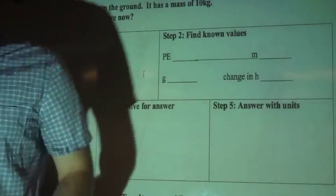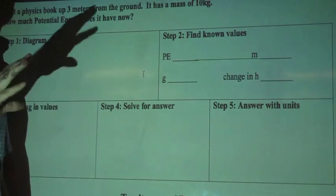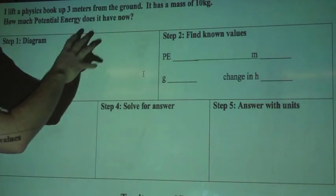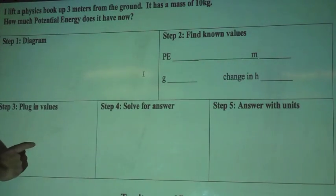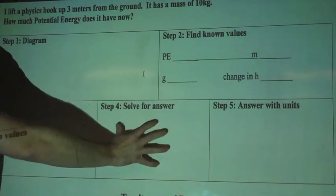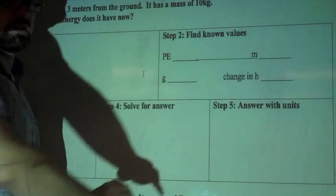Alright, so now that you've got your equation down, we're going to work on solving these problems. What we're going to do is, after we read the problem, we're going to set up a diagram, find our known values, plug those values into our equation, solve, and then write out our answer with our units.